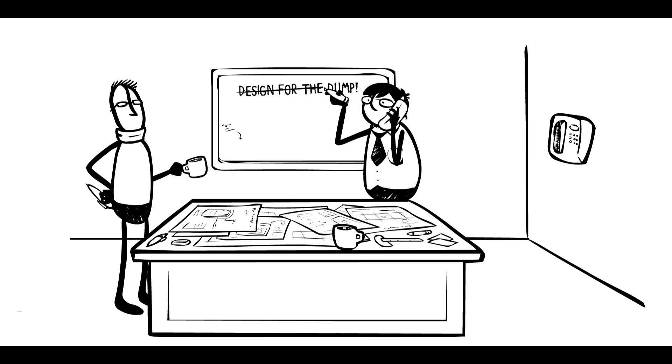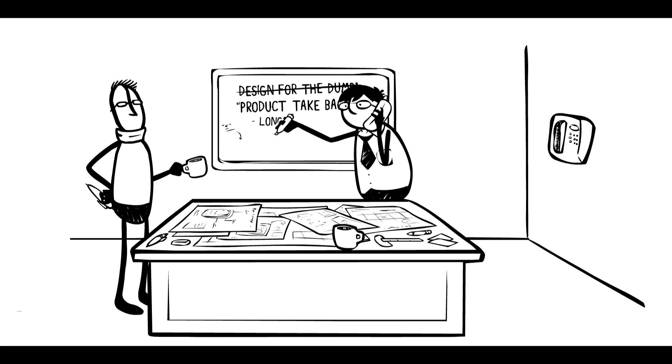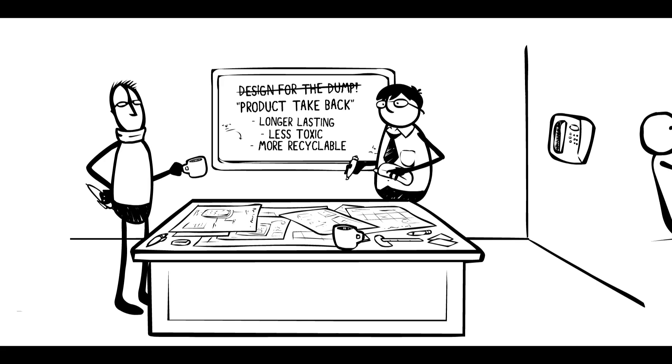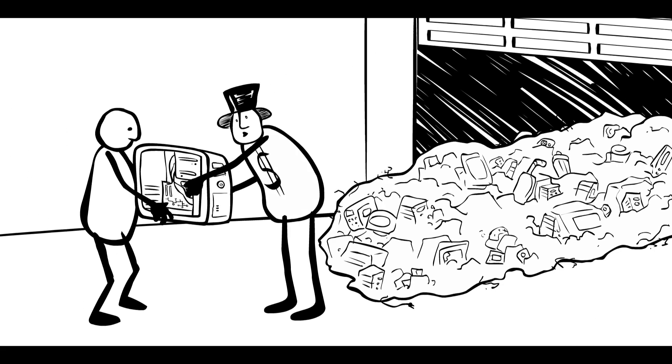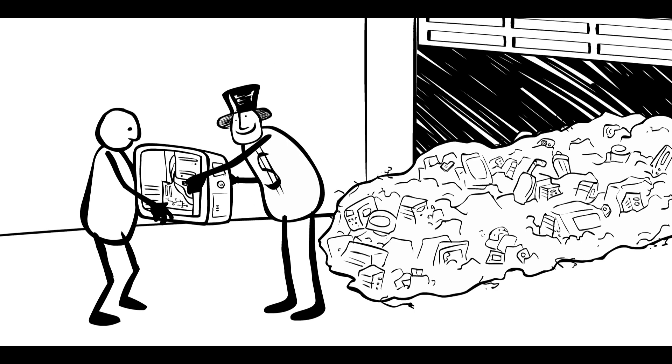Making companies deal with their e-waste is called extended producer responsibility, or product take-back. If all these old gadgets were their problem, it would be cheaper for them to just design them longer lasting, less toxic, and more recyclable in the first place. They could even make them modular so that when one part broke, they could just send us a new piece instead of taking back the whole broken mess.